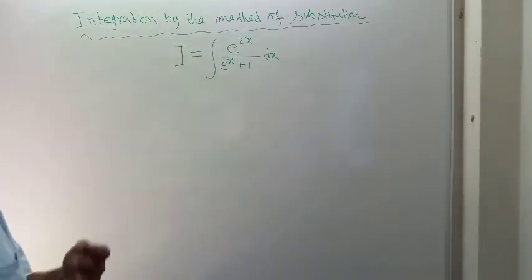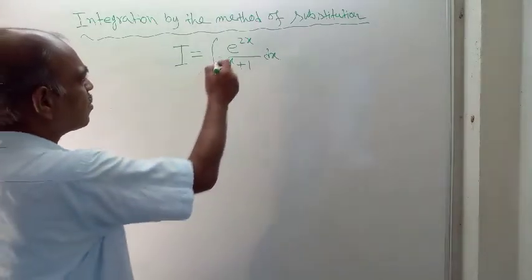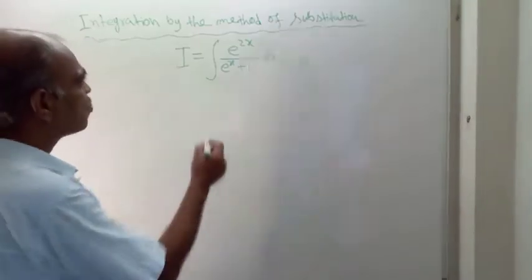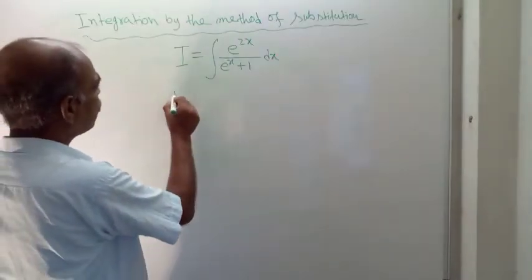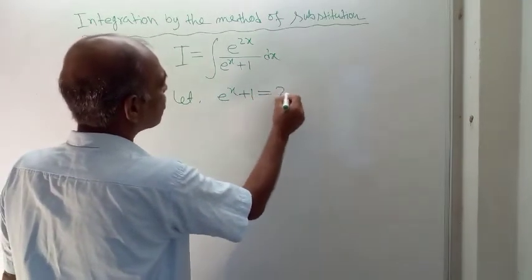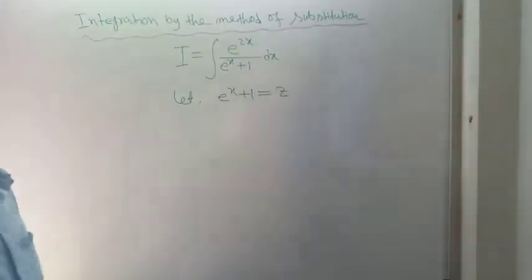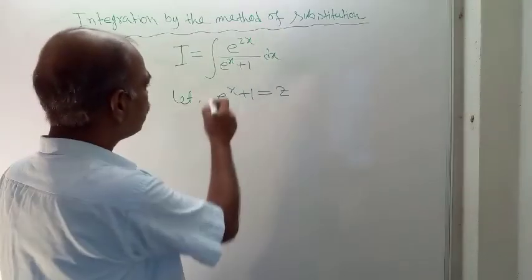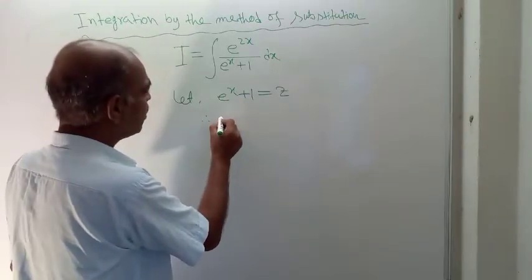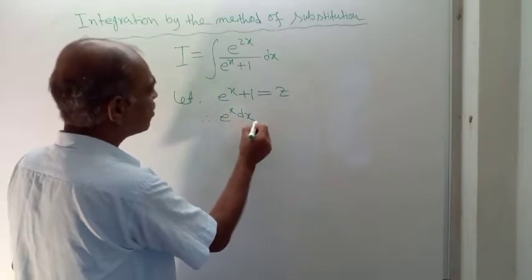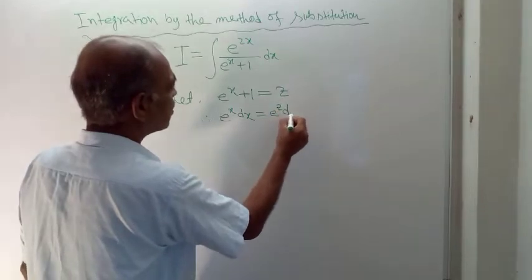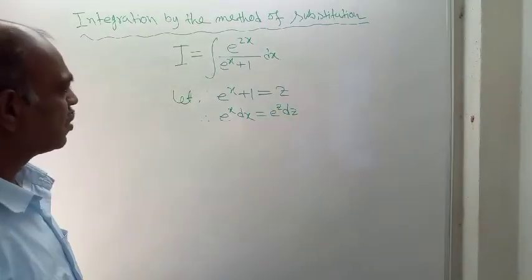It is very easy. The denominator is e to the power x plus 1, and we set that equal to z. Now differentiate both sides. On differentiation, you get e to the power x dx is equal to dz.